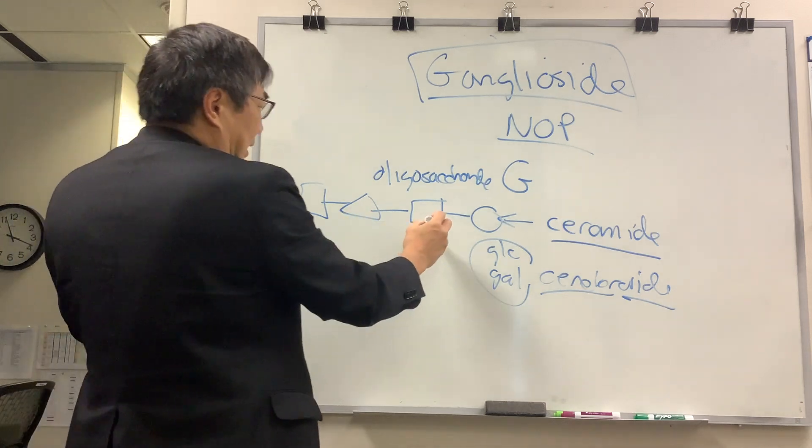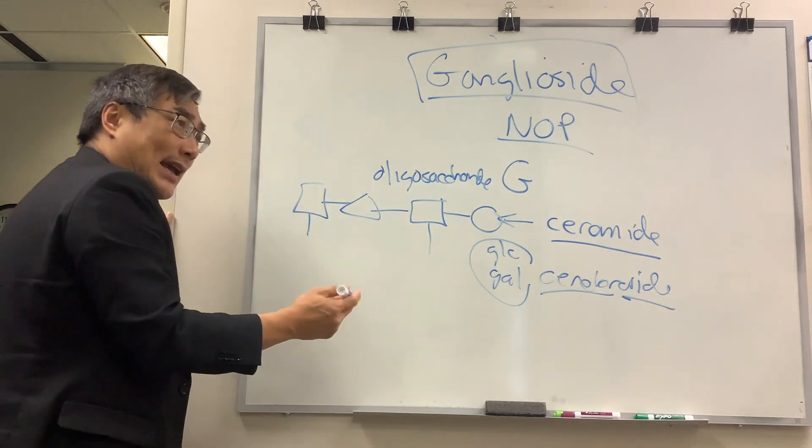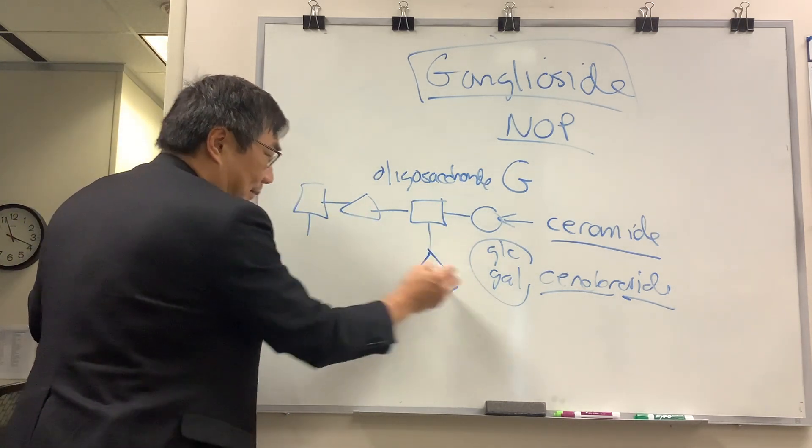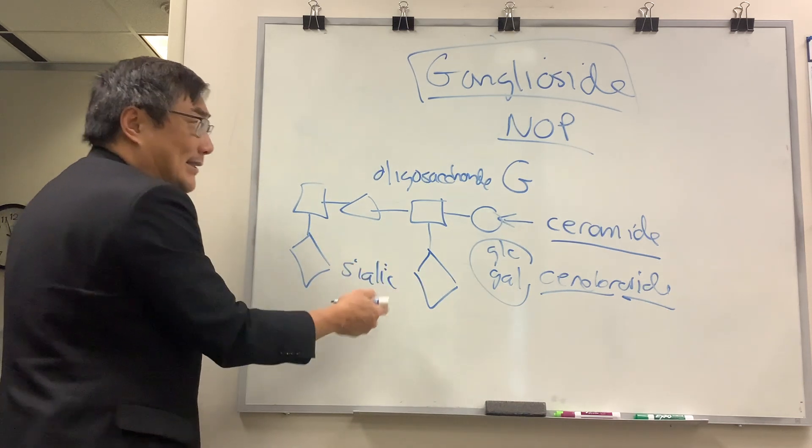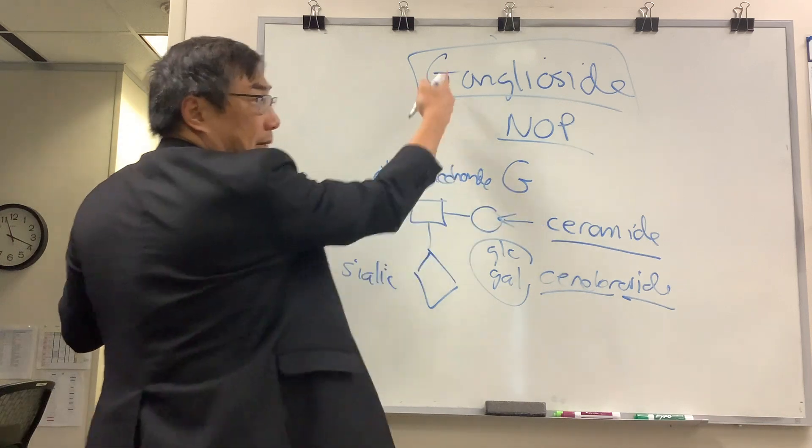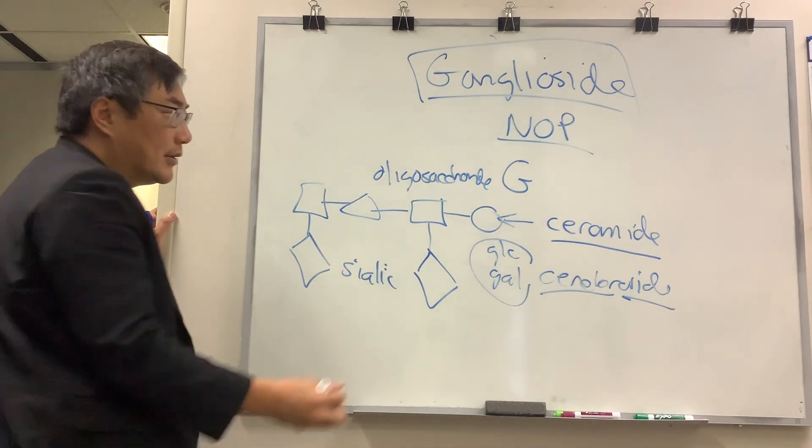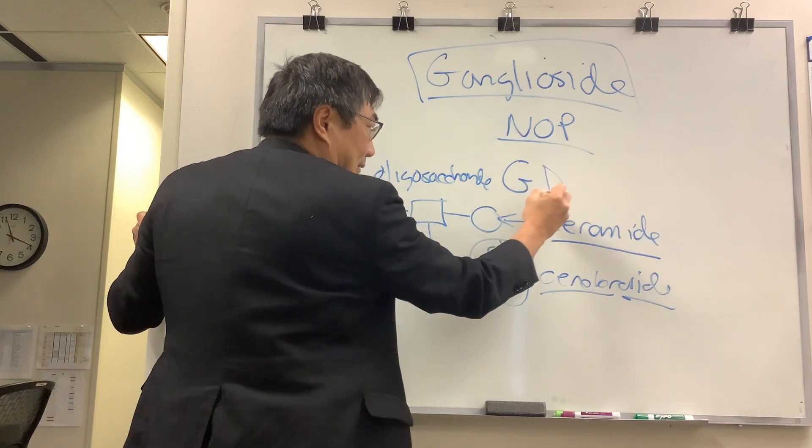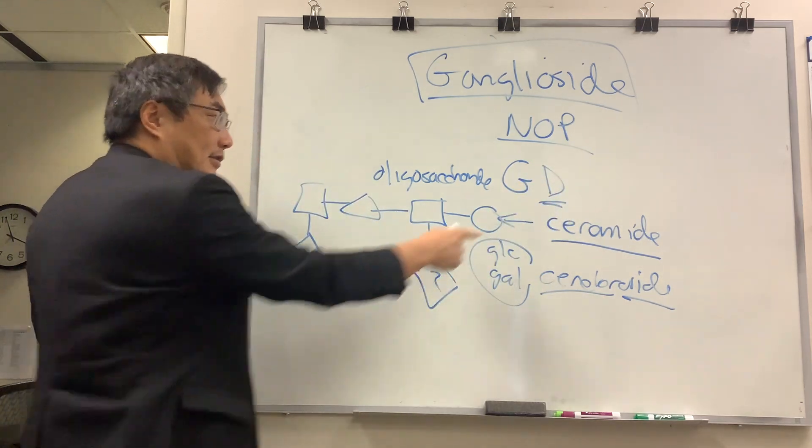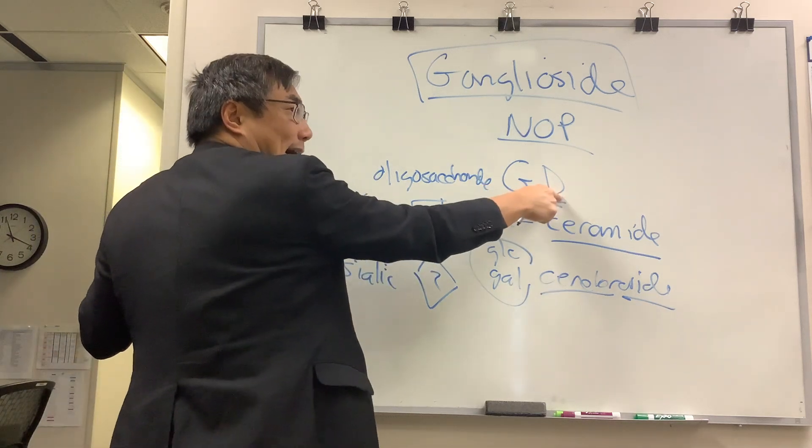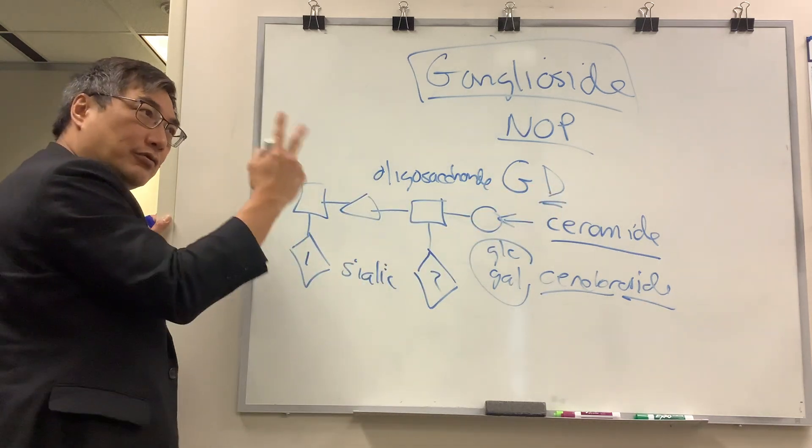On the oligosaccharide chain, you can have sialic acids. These little diamonds will represent the sialic acids. The number of sialic acids is the next letter in the naming nomenclature of gangliosides. The next letter is not a letter, it's a number. In this case, there are two sialics. So that is ganglioside disialic, two sialics.